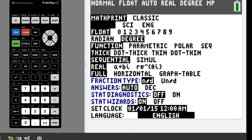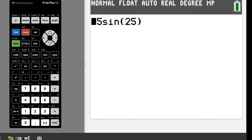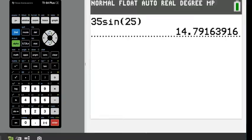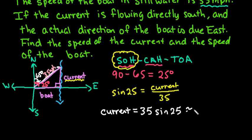Do make sure that you're in degree mode, because if you're not in degree mode then you're going to get the wrong answer. So we would say approximately 14.79 miles per hour. So right now we can see that the current is flowing at approximately 15 miles per hour south.